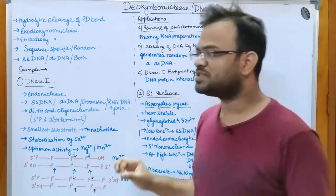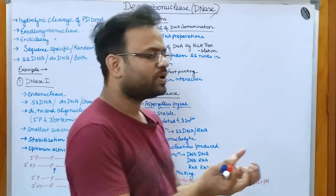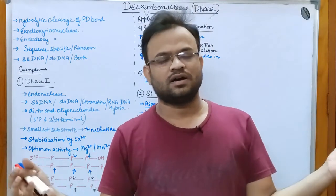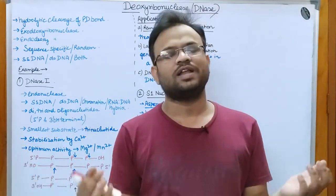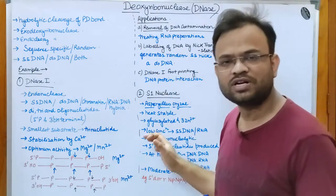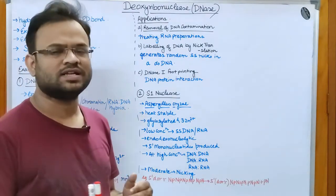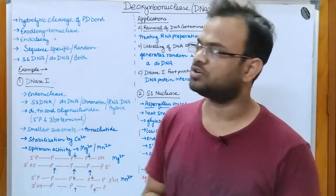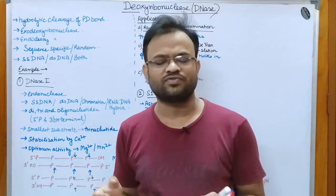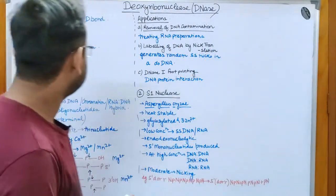As the name suggests, deoxyribonuclease will break the DNA strand. DNA is double-stranded in general, so it will cut down the DNA. This is important with respect to examinations — even in GATE and CSIR NET, questions on different enzymes are asked. The function of this enzyme is the hydrolytic cleavage of the phosphodiester bond.